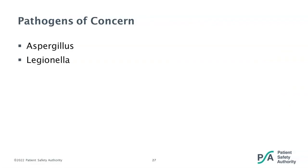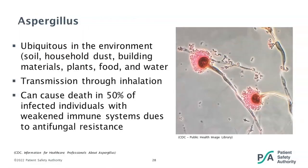Now that we've gone through how to complete an ICRA and what mitigation strategies are involved, let's talk about some pathogens of concern. The two pathogens that come to mind first for construction are Aspergillus and Legionella. Aspergillus is a fungus that is ubiquitous to the environment — it can be found anywhere: soil, household dust, building materials, plants, food, and water. This is why it's such a concern during construction when you're demolishing areas that may not have been touched for extended periods of time and stirring up a lot of debris.